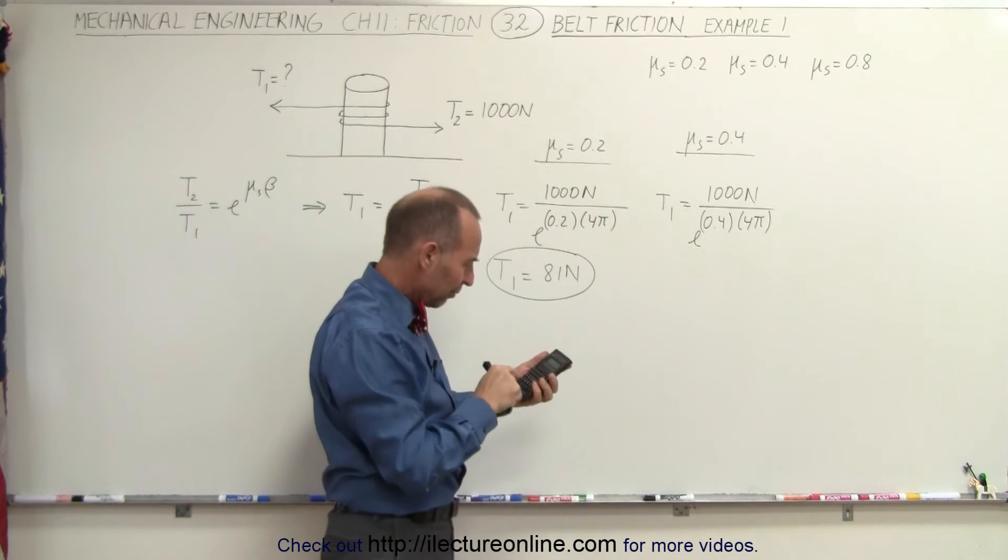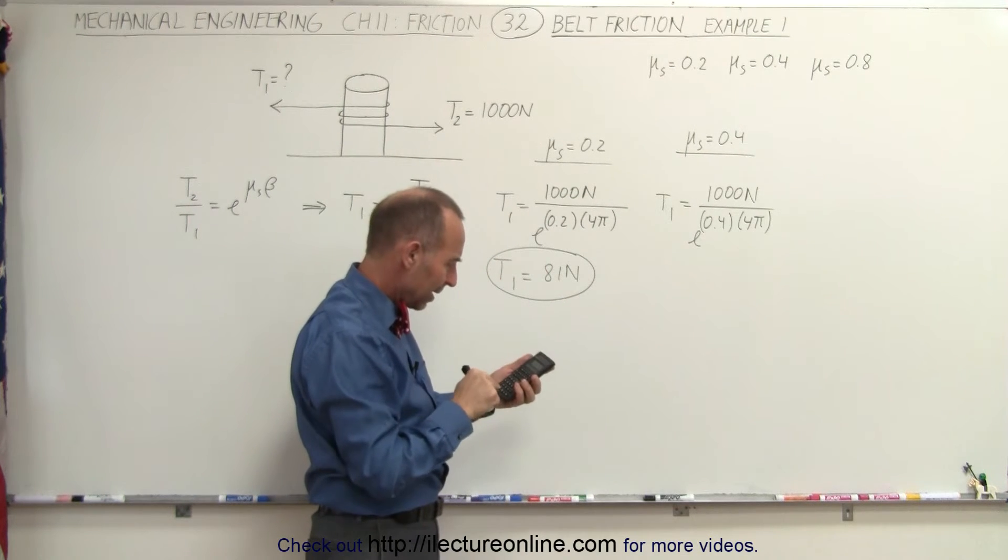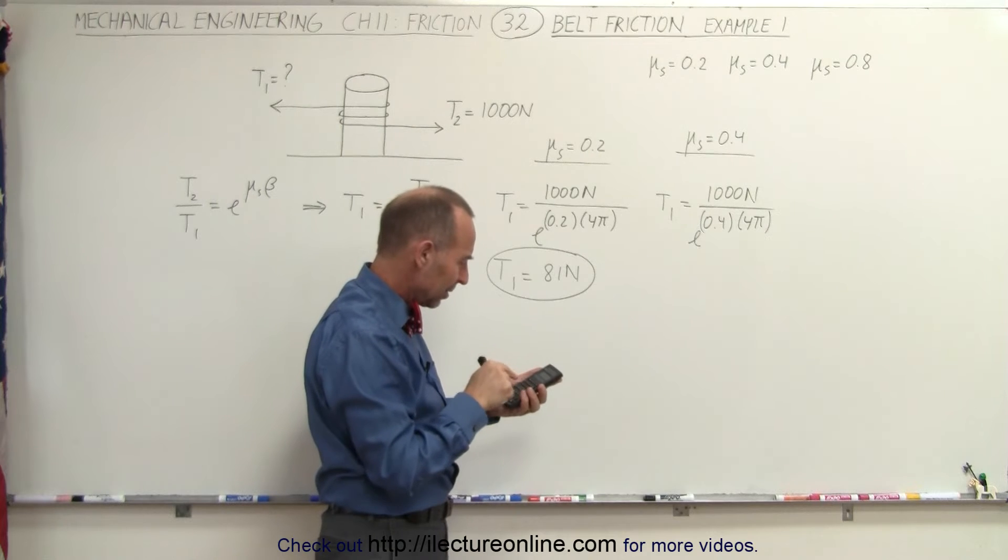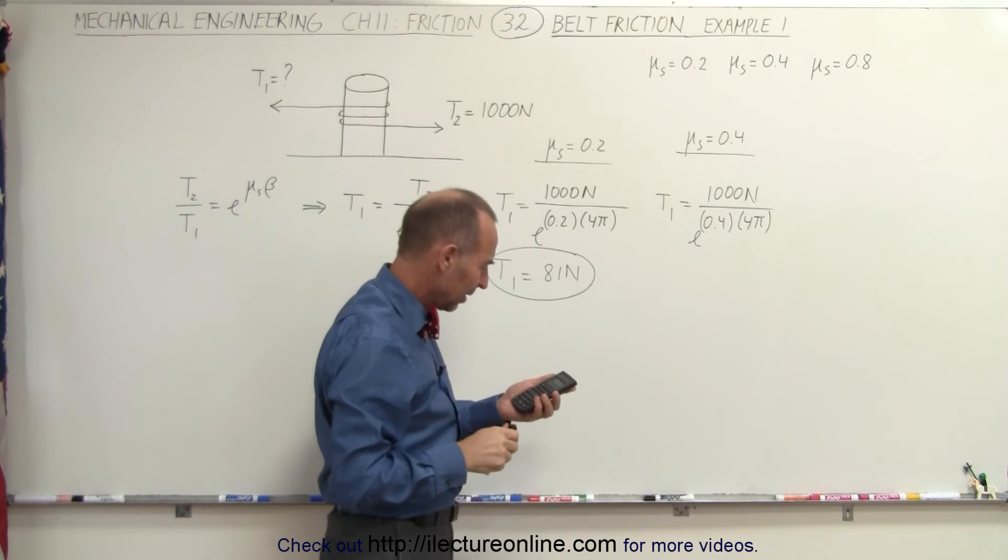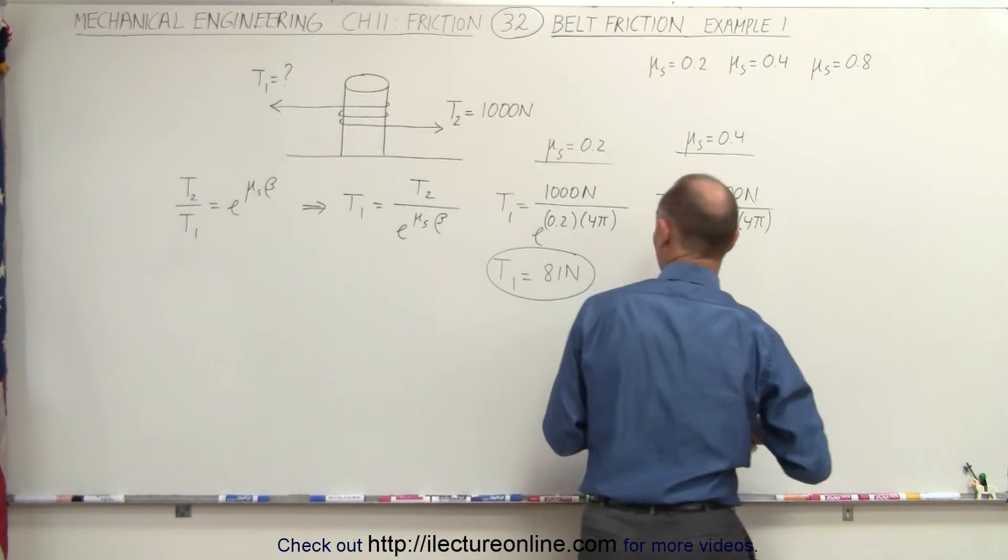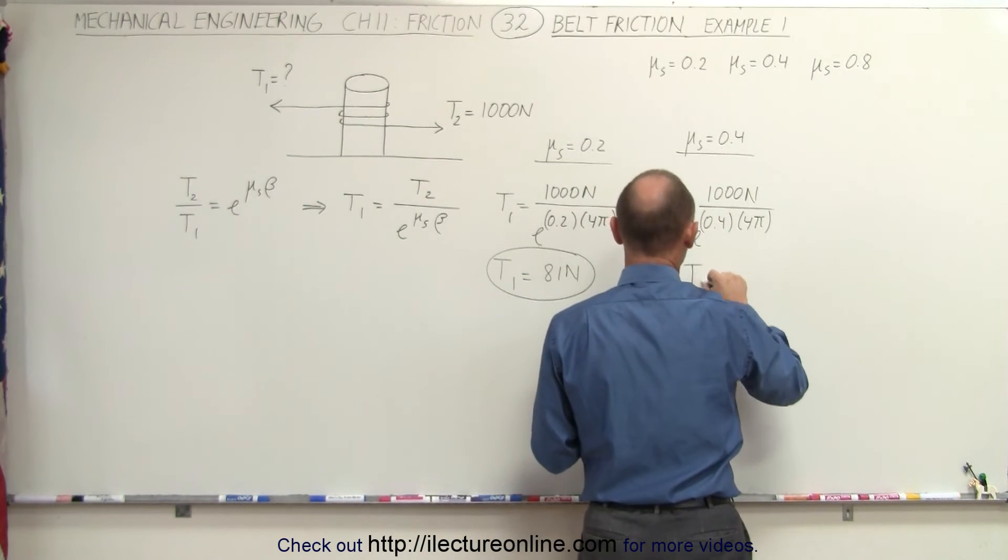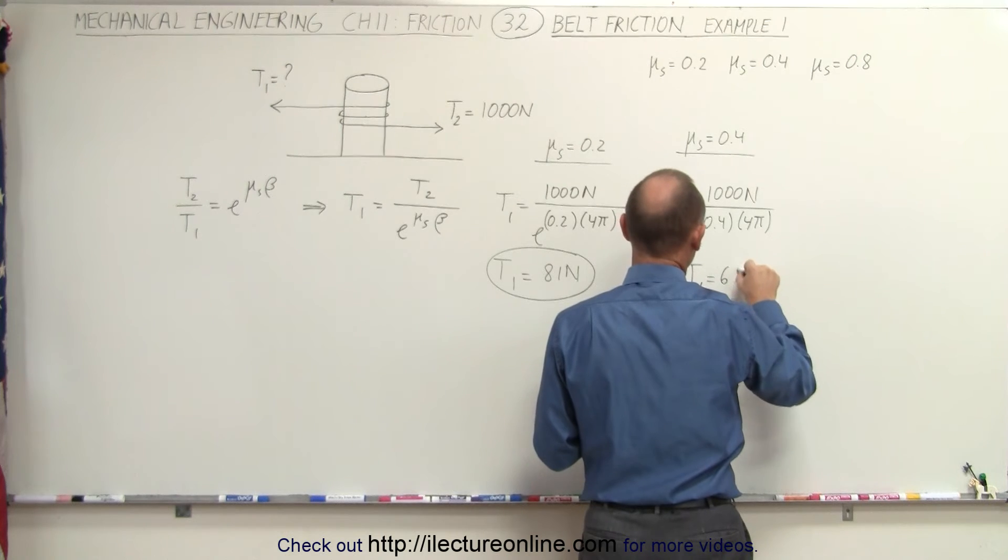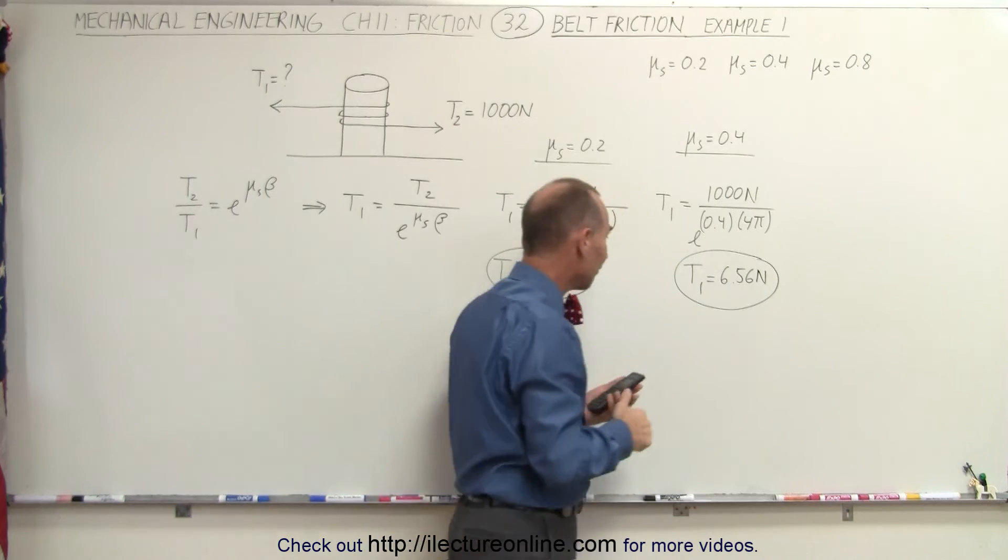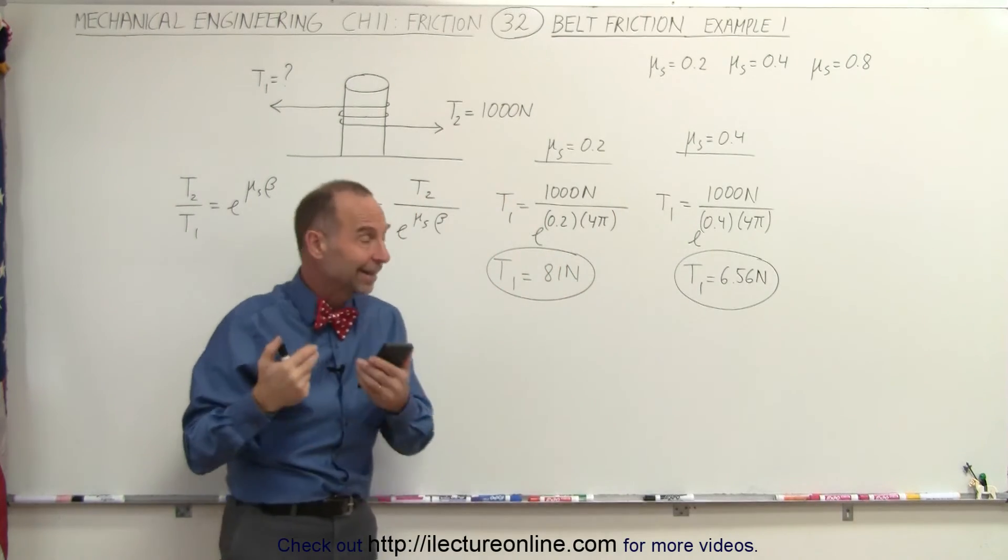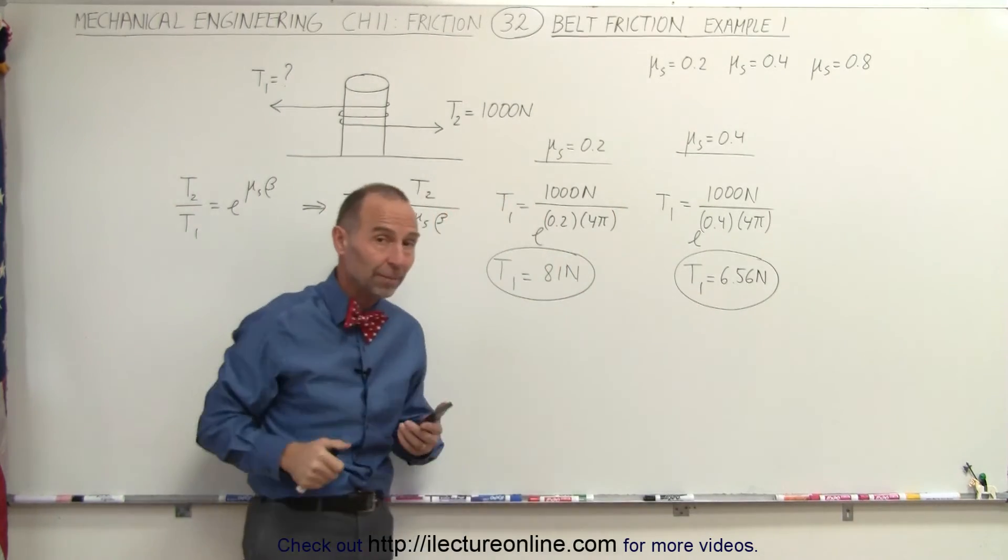So we have 0.4 times 4 times π, e to the x inverse times 1,000 equals, so it's only 6.56 newtons. T1 is equal to 6.56 newtons. Notice by doubling the coefficient of friction we now require less than one tenth of tension to keep the rope from slipping.